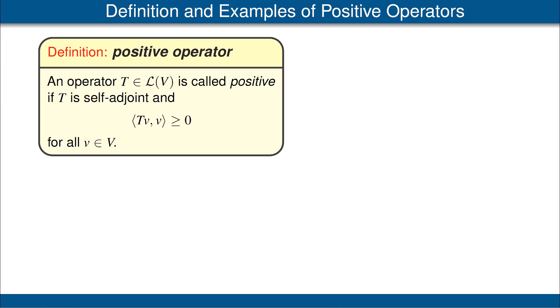An operator T on V is called a positive operator if T is self-adjoint and the inner product of T(v) with v is greater than or equal to 0 for all vectors v in our inner product space V.